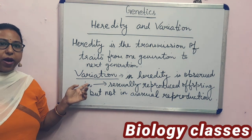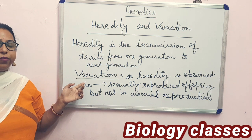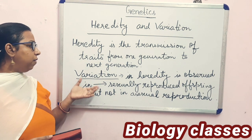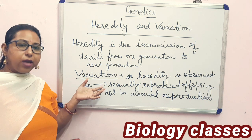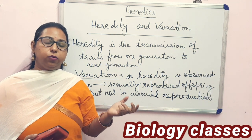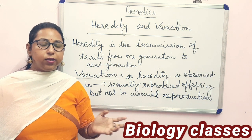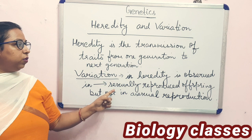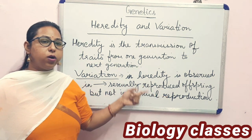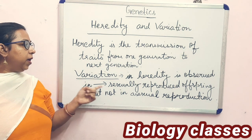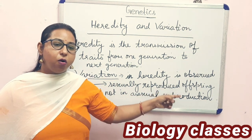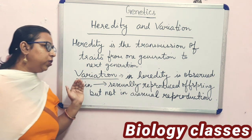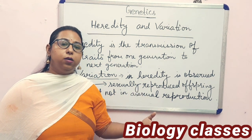Variation means you will find a number of different colors, sizes, and characters in a population. Not everybody in a population is equal to each other. Variation is noticed in heredity and is observed in sexually reproduced offspring. It does not occur in asexual reproduction, and when it does occur there, it may be through mutation.